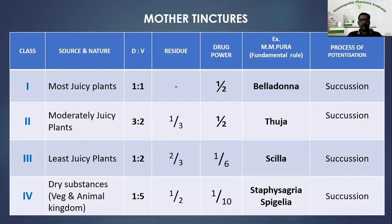Class four — dried substances from vegetable or animal sources. Drug-vehicle ratio is 1:5. Residue is one-half. Drug power is 1/10, meaning to every ten parts of mother tincture, one part is actual drug and nine parts are vehicle. The fundamental rule is Staphysagria and Spigelia. Potentization by succussion.